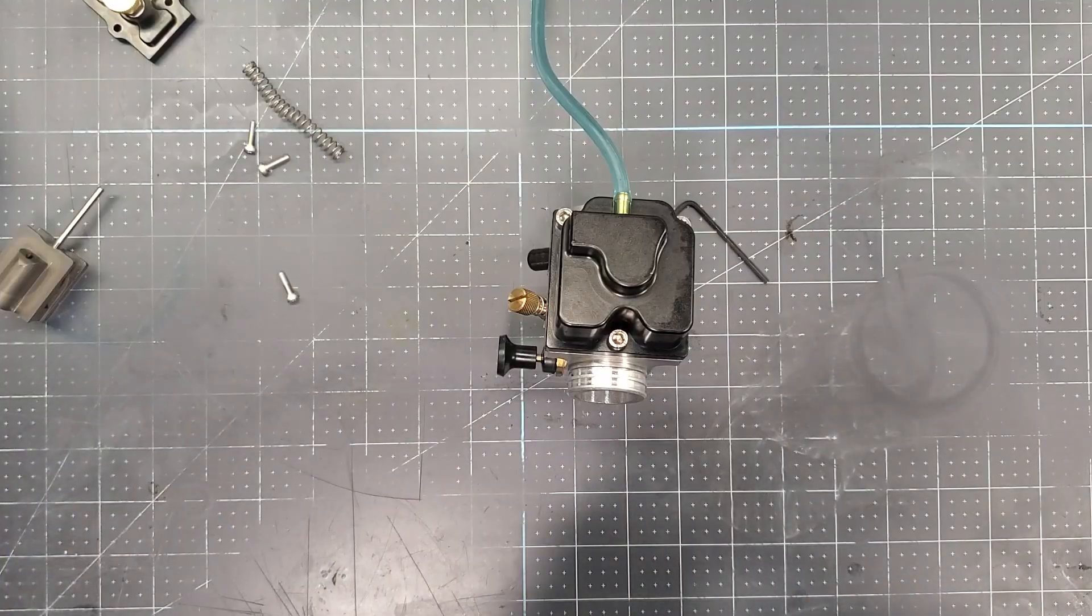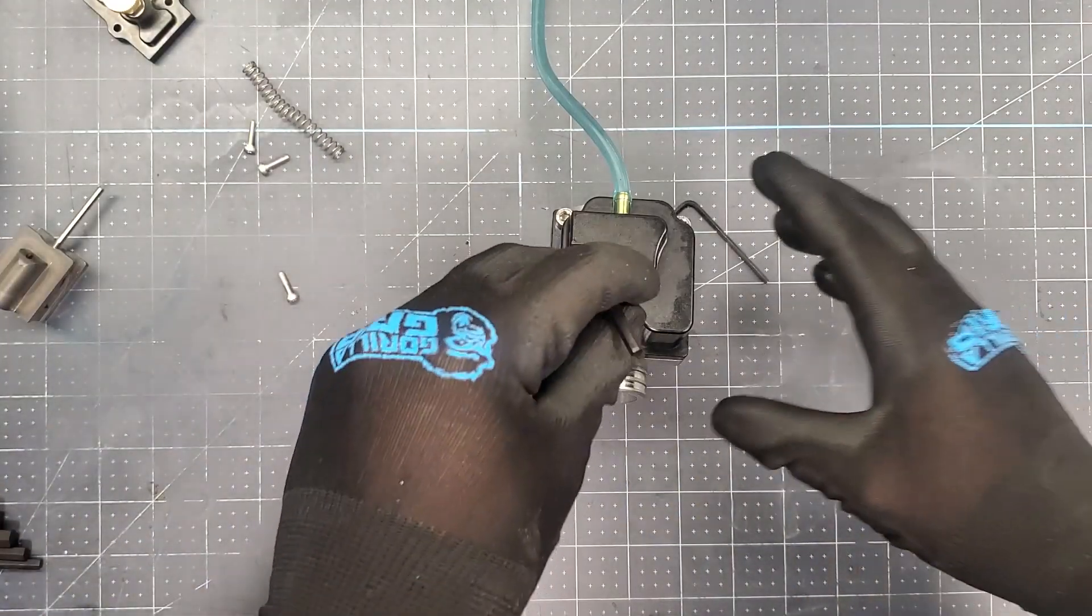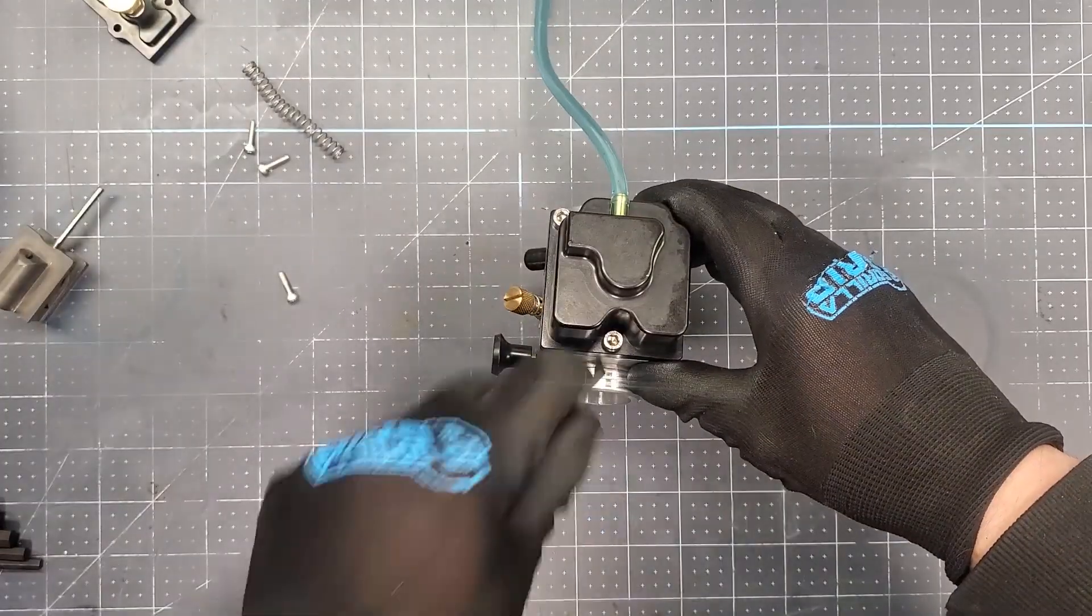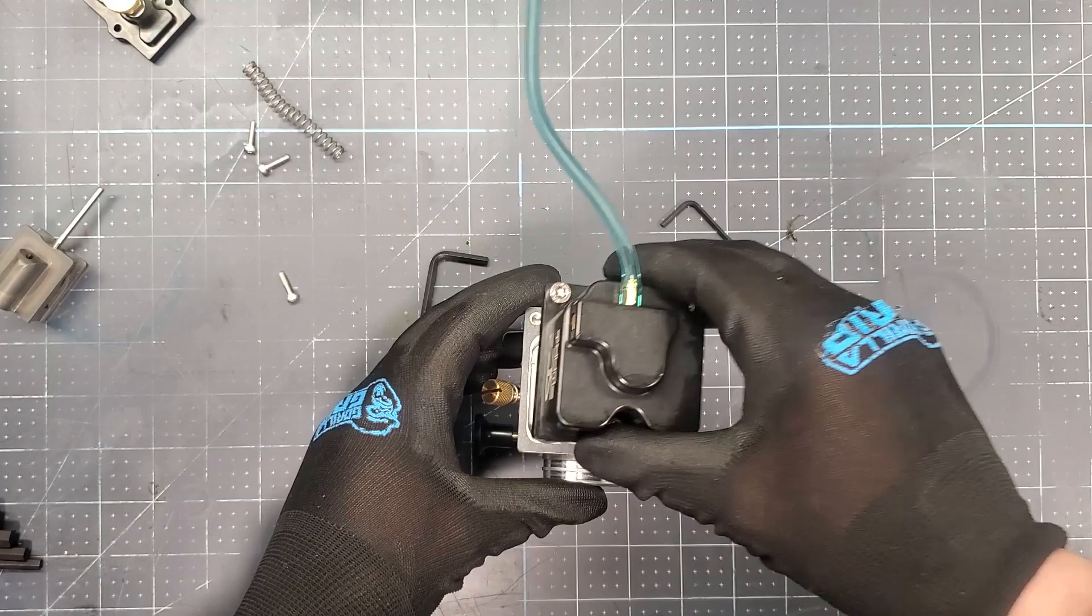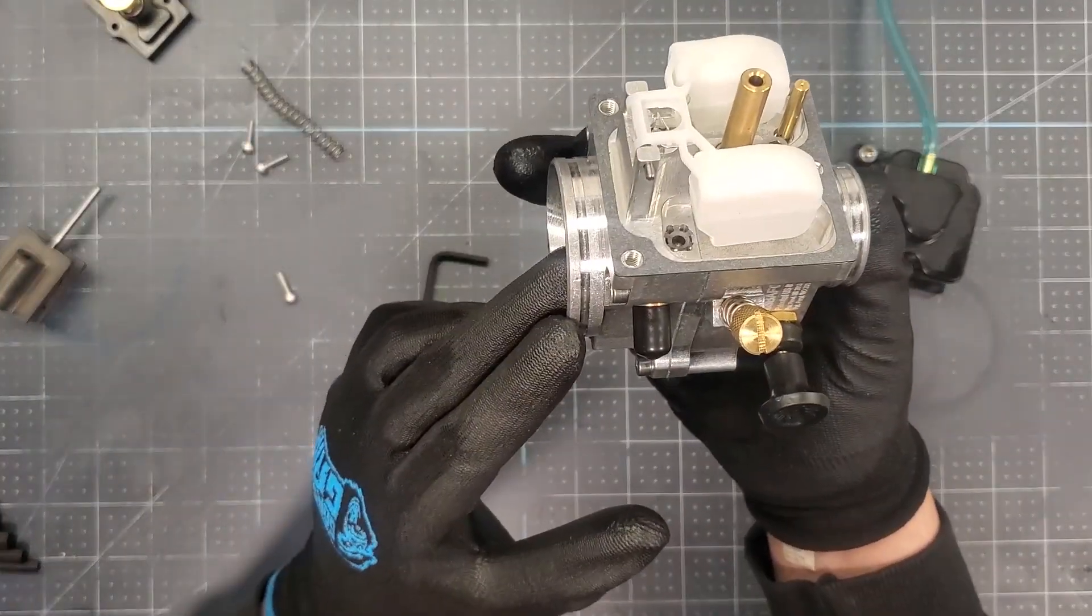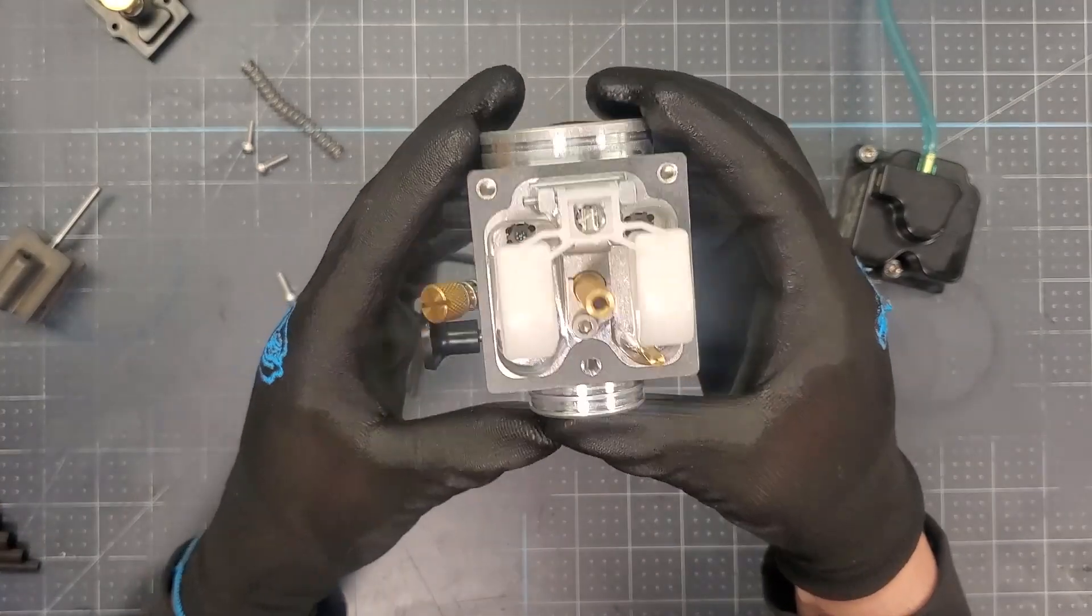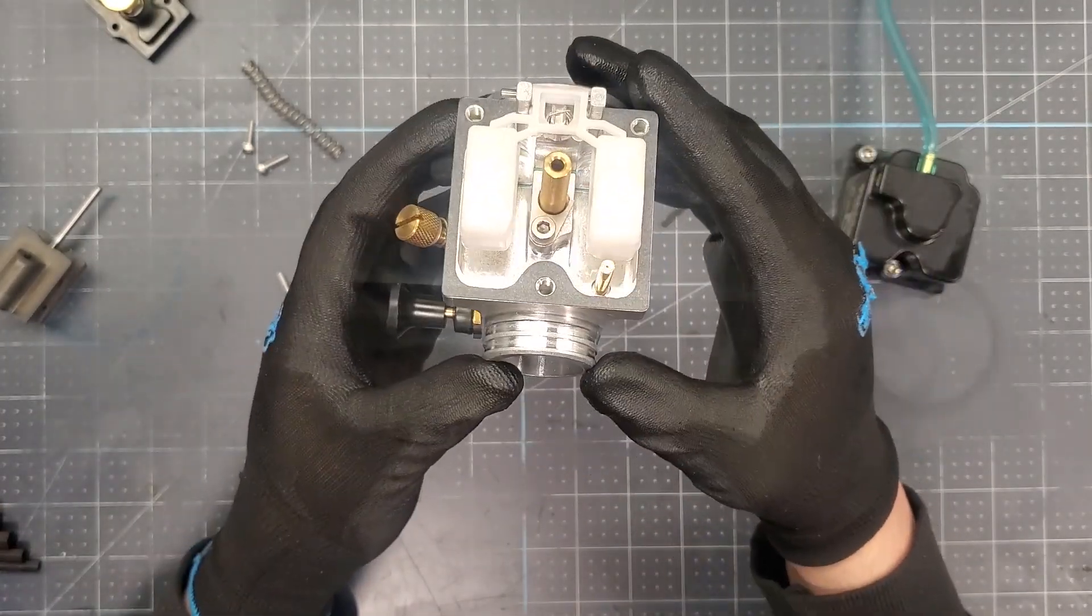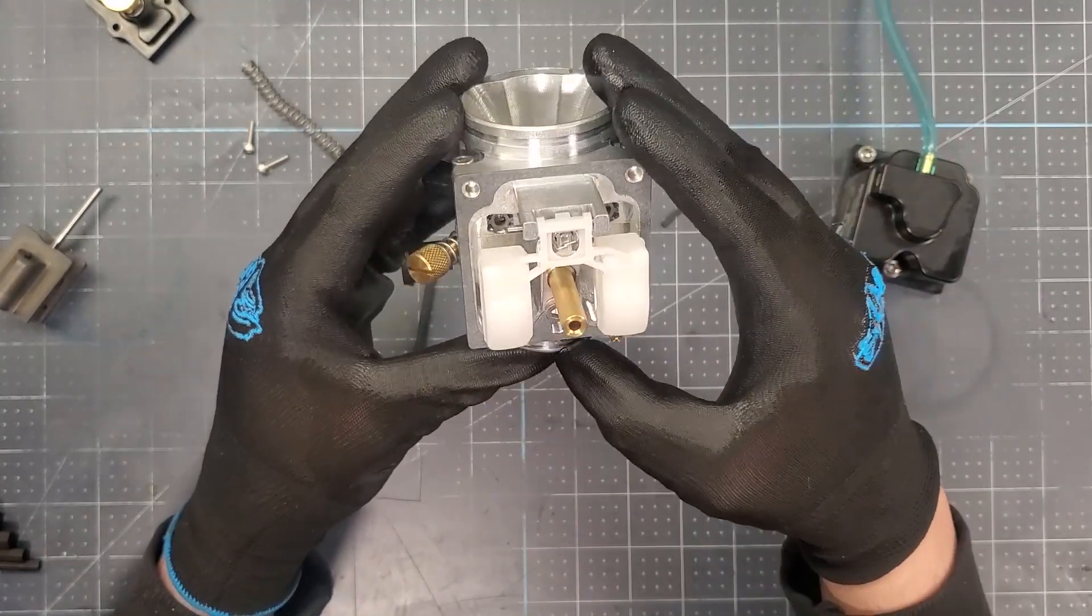The float bowl is also made from billet aluminum, is pressurized. It is not vented towards the atmosphere. These two holes I showed you in the bell mouth, they vent into the float bowl through these holes and they pressurize it. That way atmospheric changes automatically compensate fuel to air ratio.